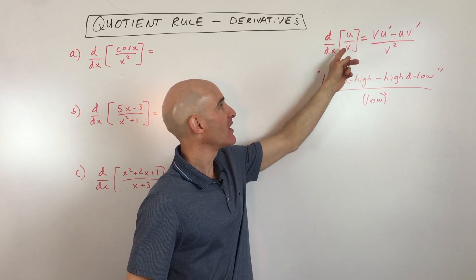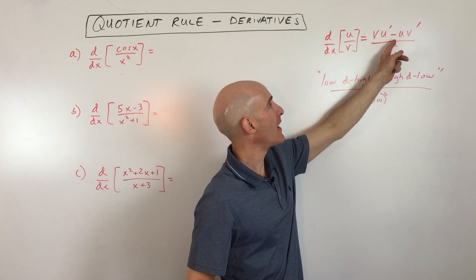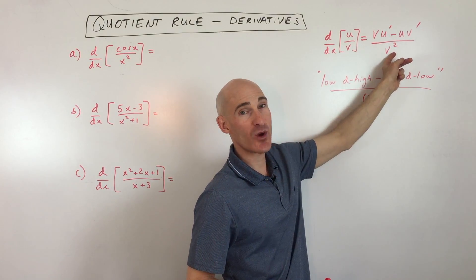When you divide one quantity by another quantity as a quotient, you can see I've written the formula over here. It's V U prime minus U V prime divided by V squared.